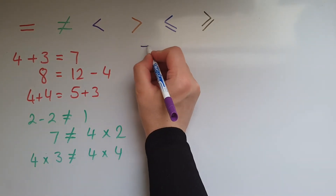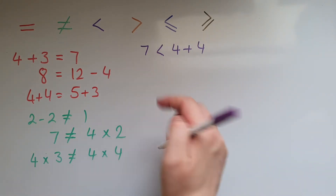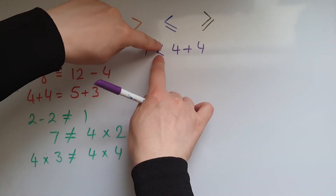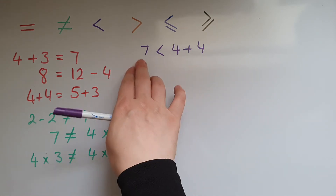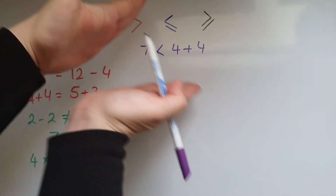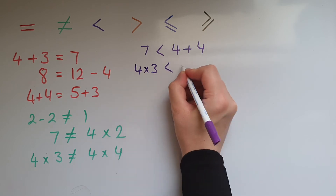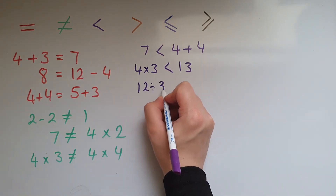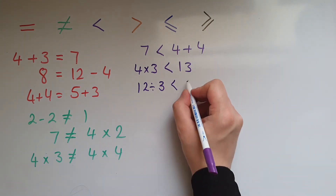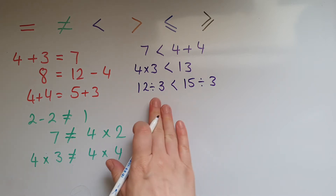Less than: 7 is less than 4 add 4. As you look at this symbol, it starts with a dot and then expands in this direction, so whatever is on the wider side is greater. Some people prefer to think of it as a crocodile mouth — the crocodile wants to eat the larger thing. Another example: 4 times 3 is less than 13, or 12 divided by 3 is less than 15 divided by 3 — that gives us 4 is less than 5.